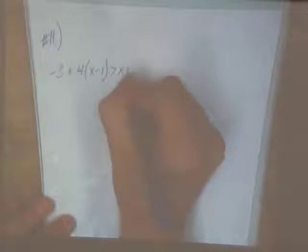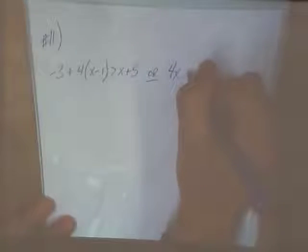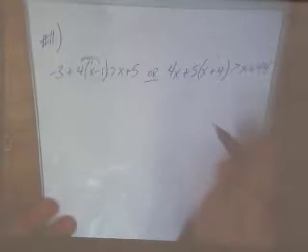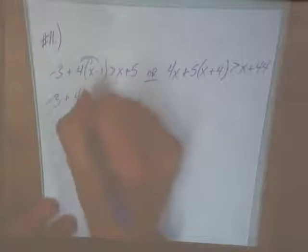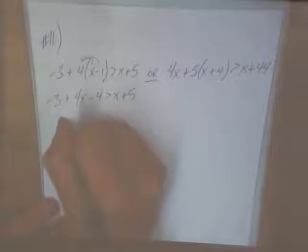Negative 3 plus 4x minus 1 greater than x plus 5 or 4x plus 5 times x plus 4 greater than x plus 4. Alright, what do we do first, Jay? Distribute. Distribute. Maybe Jay will see this one. Combine some like terms.